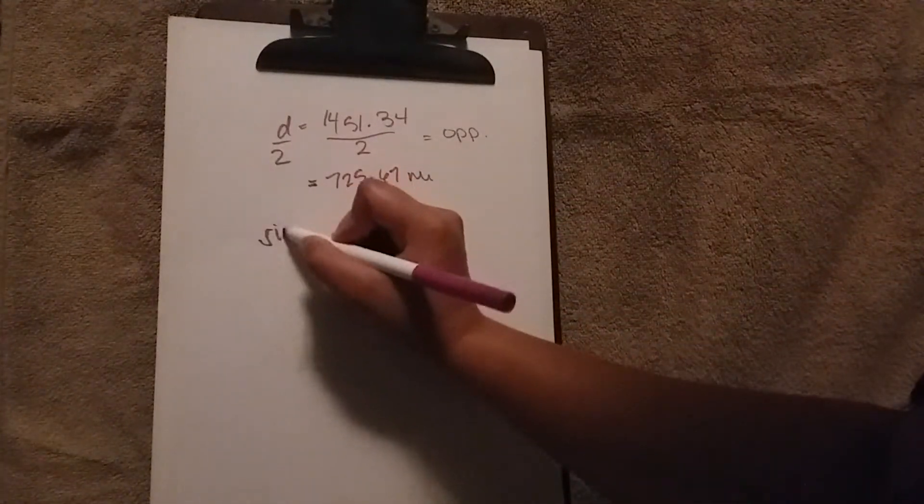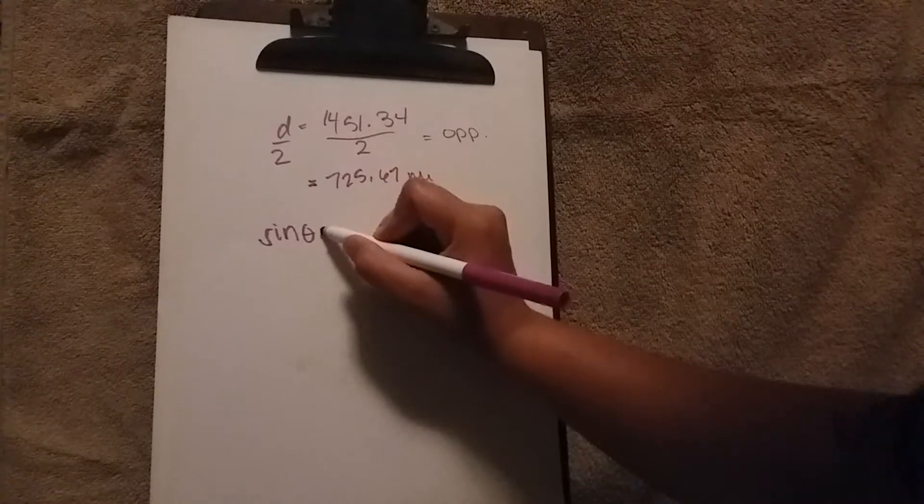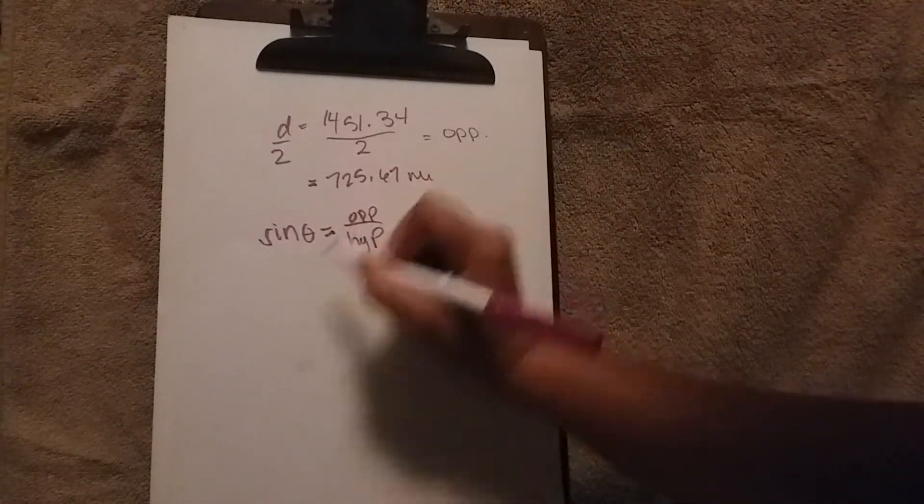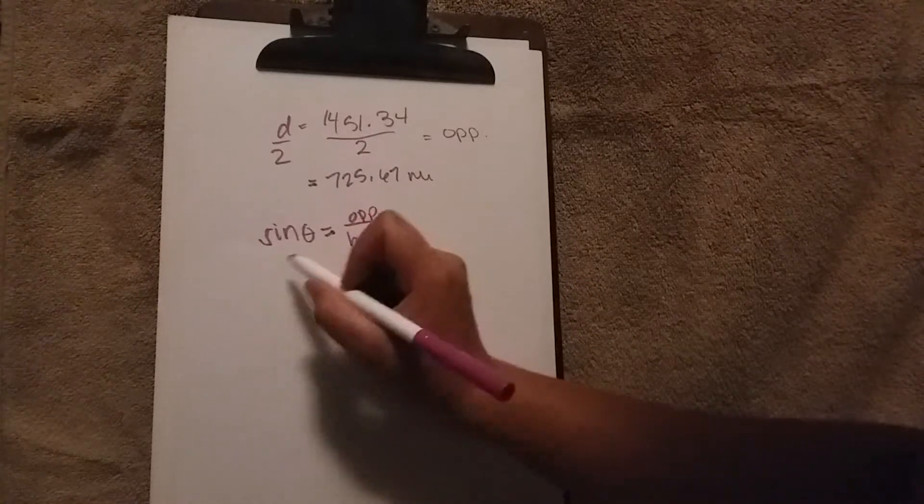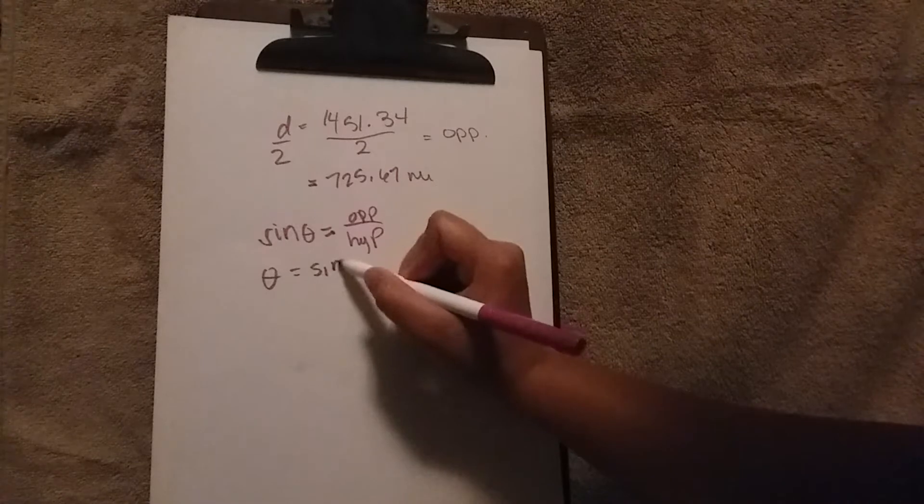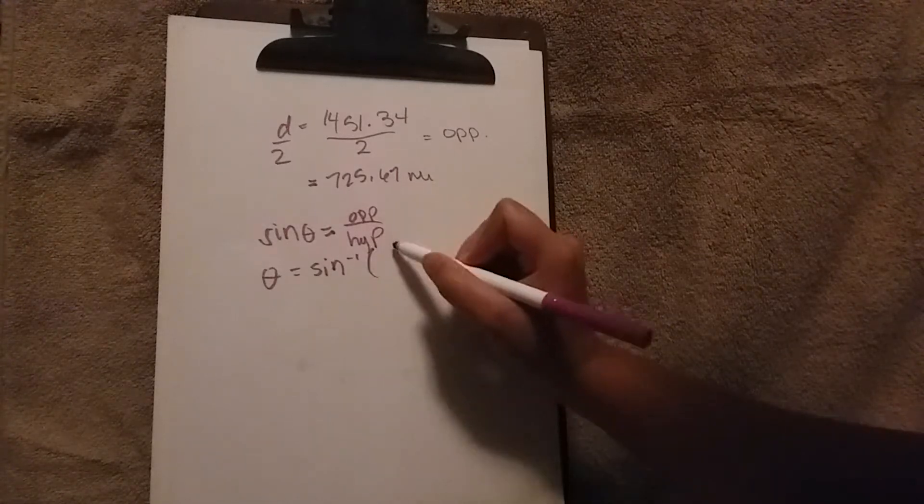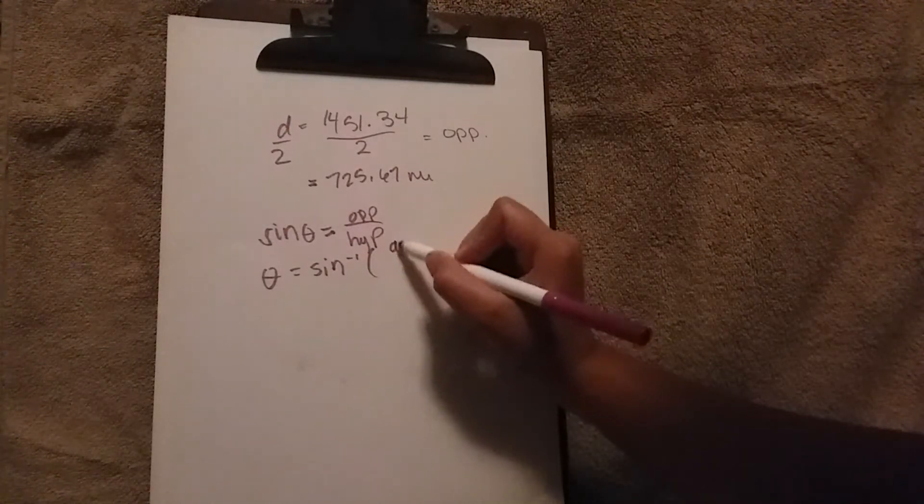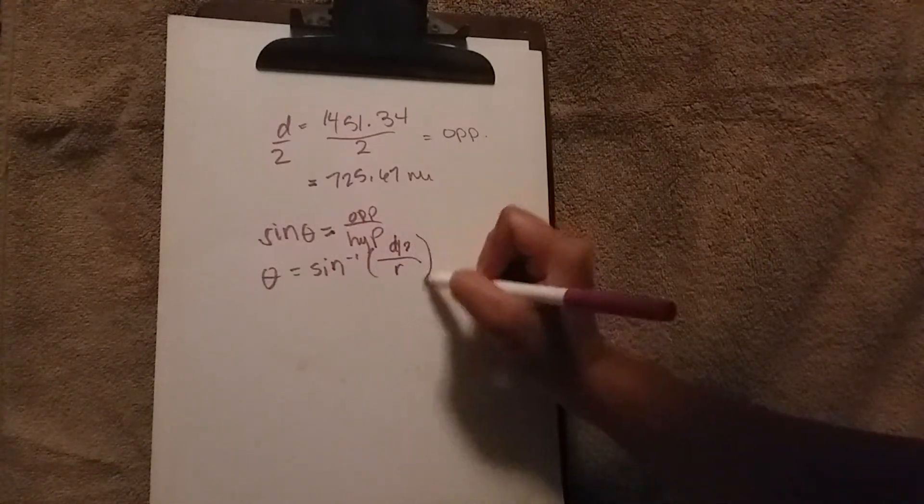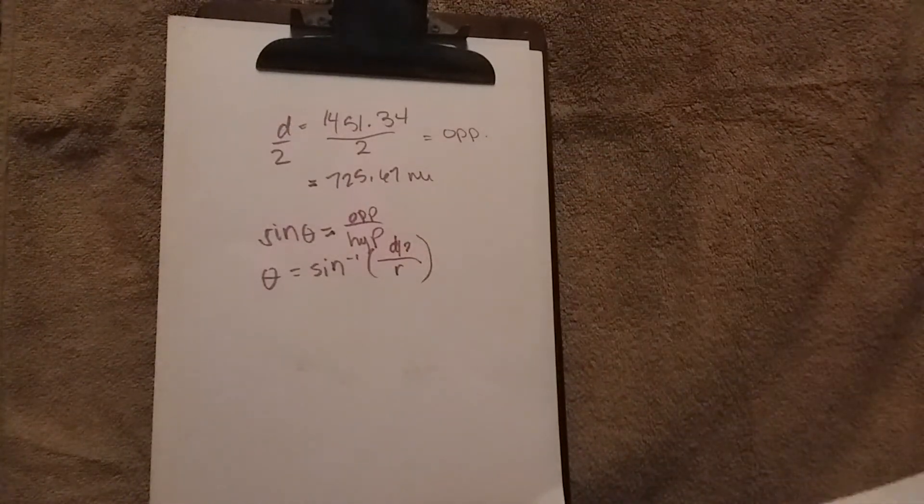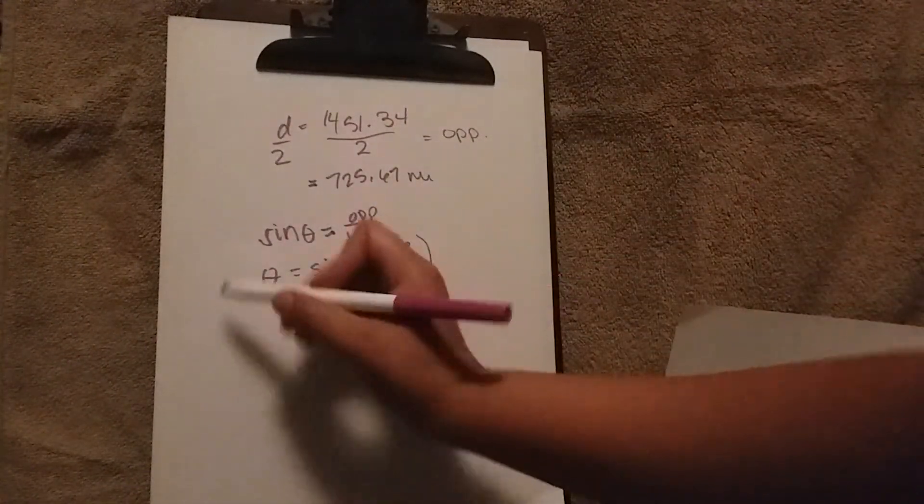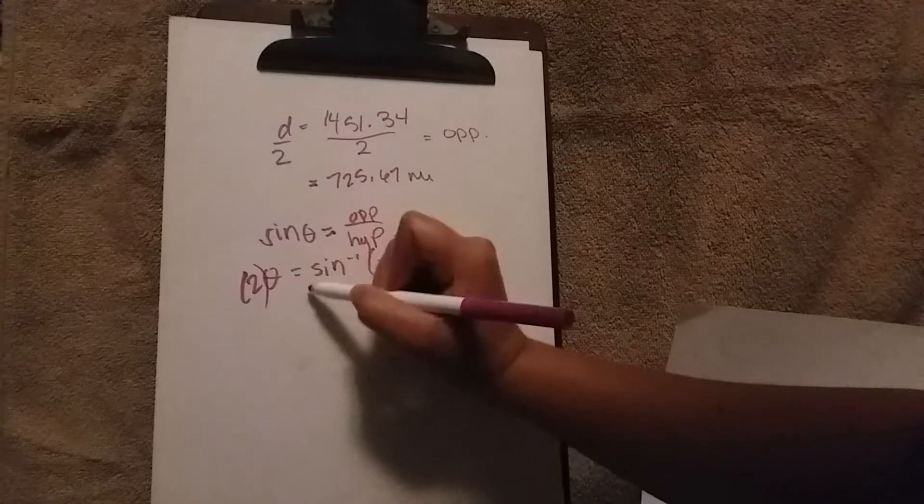In order to find that angle, take our opposite and divide it by our hypotenuse. In this case, we use the inverse sine, and our opposite is our distance divided by two, and our hypotenuse is actually our radius. But since we need two of these angles, multiply the whole equation by two.